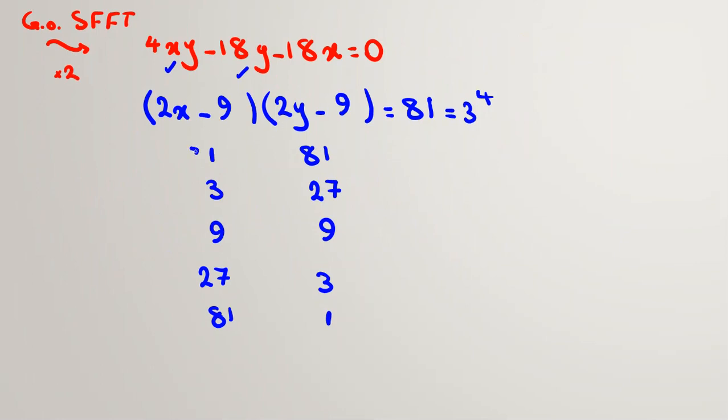Because the problem wants only x + y, and it is symmetric with respect to x and y, if we check 1, 81, it is exactly similar to 81, 1. The answer of x + y is the same. So we need to only check one of them. Only x and y will be switched. Also for this case, 3, 27 is exactly similar to 27, 3. So we need to only check first three cases.